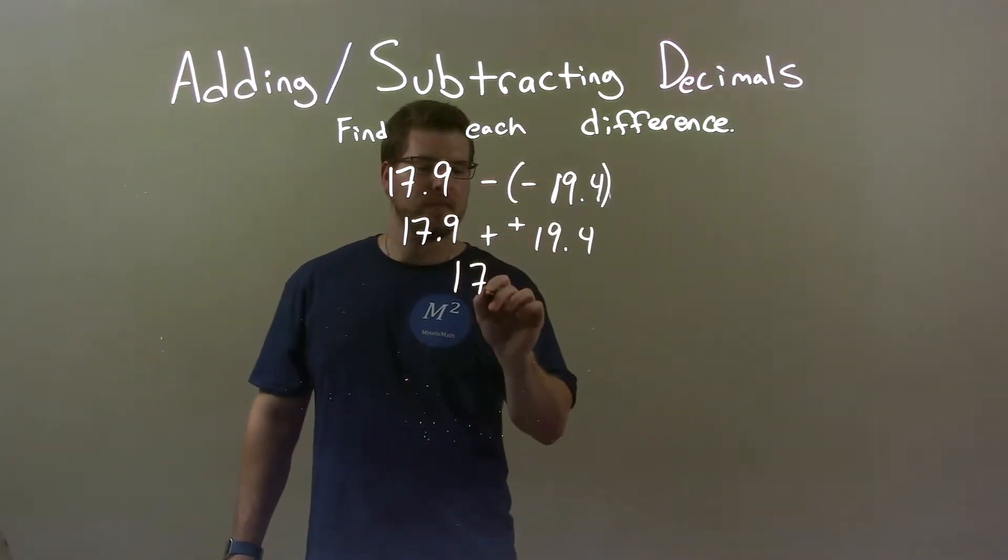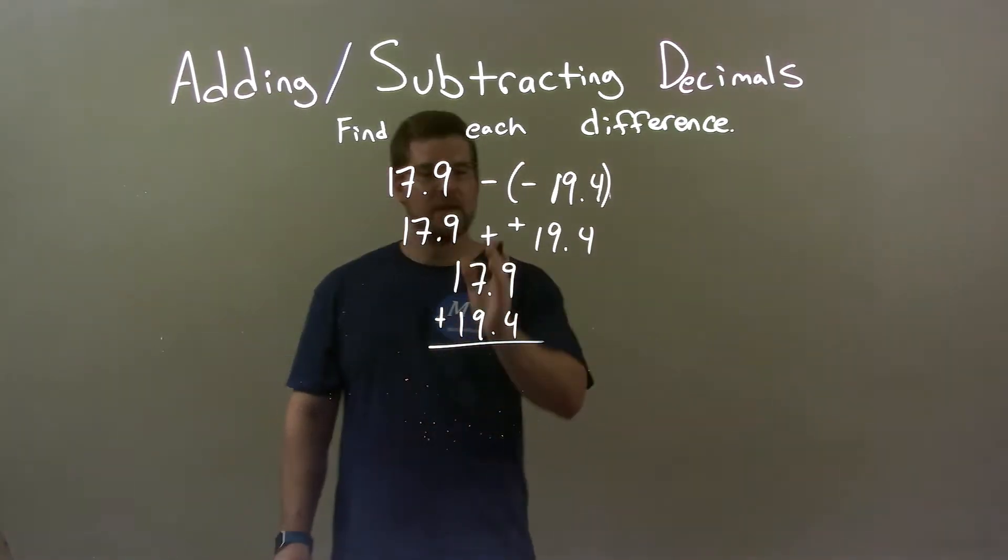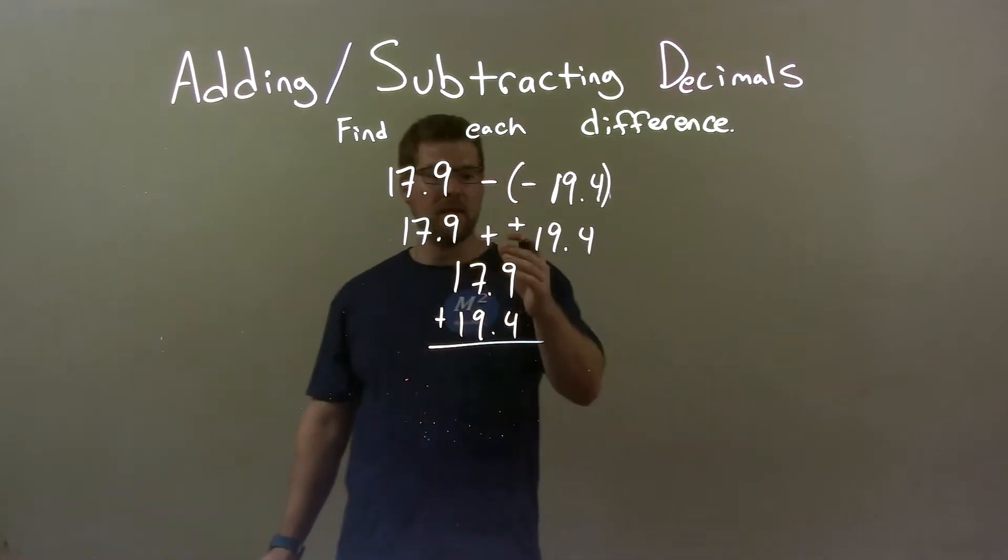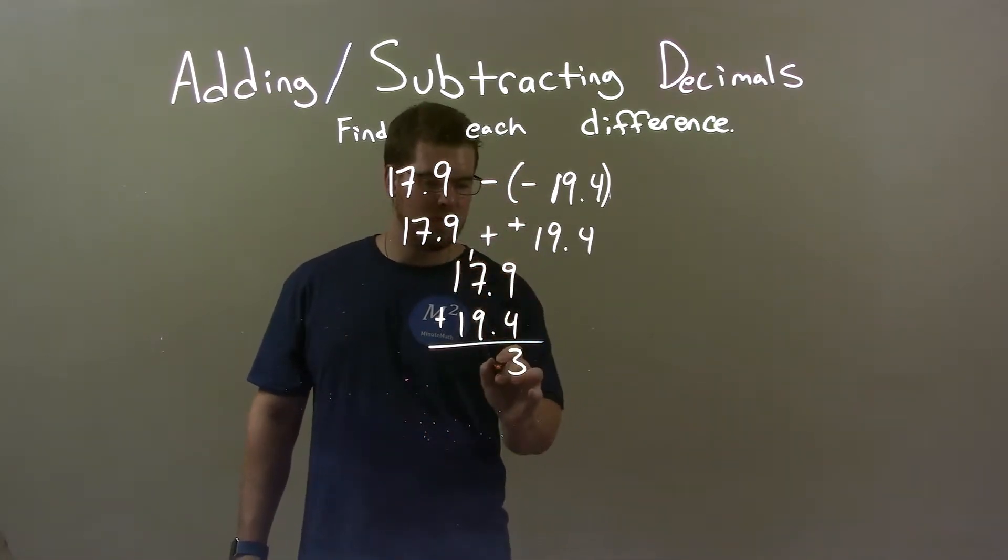Do it like we always do. 17.9 plus 19.4. Just make sure the decimals are lined up. 9 plus 4 is 13, 3, we carry the 1. Don't forget that decimal there.